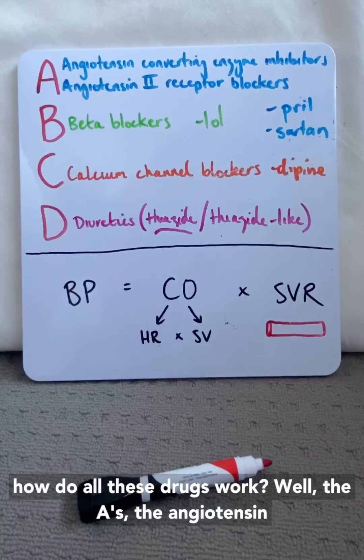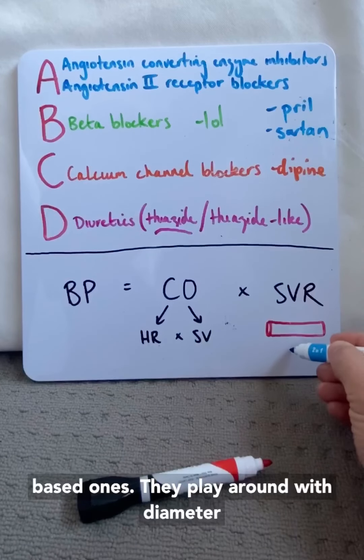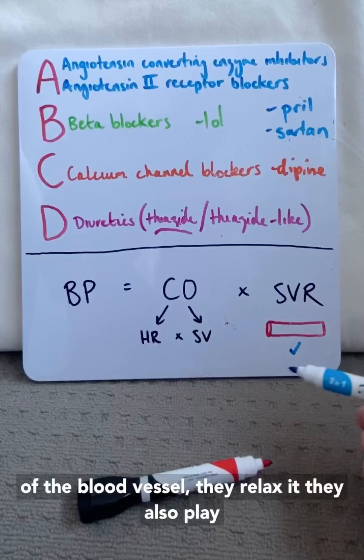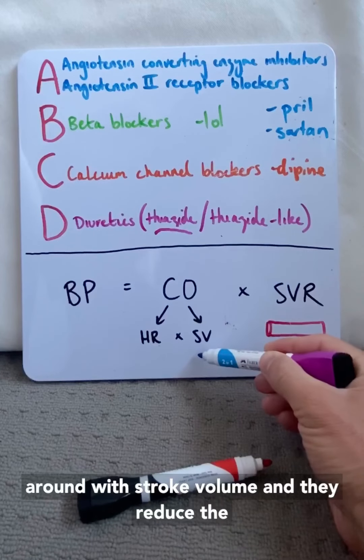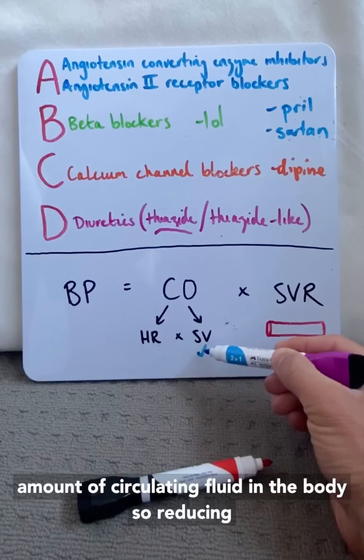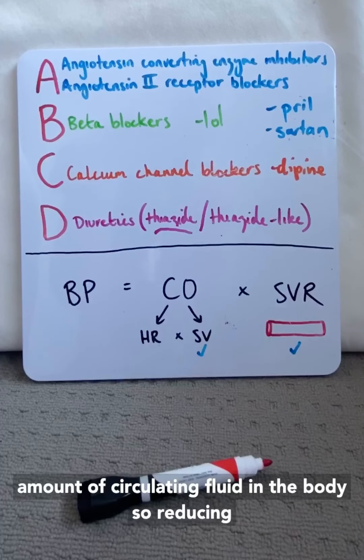All right, how do all these drugs work? Well, the A's, the angiotensin-based ones, they play around with diameter of the blood vessel. They relax it. They also play around with stroke volume and they reduce the amount of circulating fluid in the body, so reducing stroke volume.